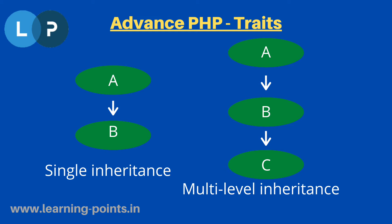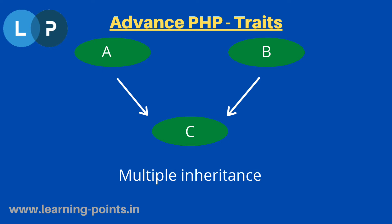This is single-level inheritance. The second type is multi-level inheritance, where the parent of B is A and the parent of C is B. So C can use the properties of both A and B if B extends A and C extends B. This is multi-level inheritance.